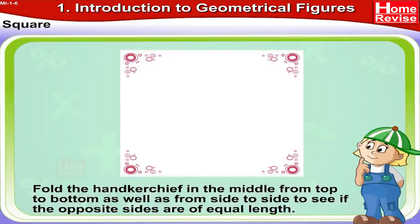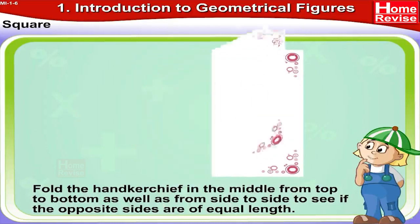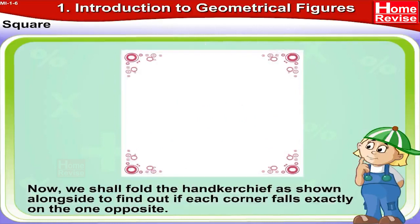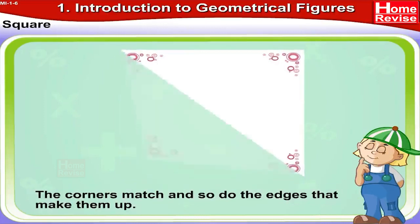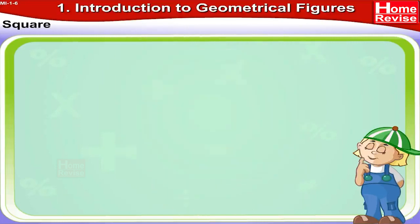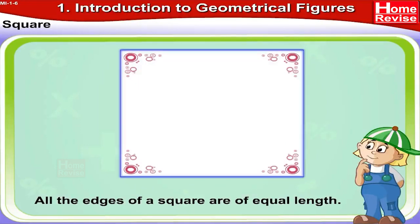Now fold the handkerchief in the middle from top to bottom, as well as from side to side, to see if the opposite sides are of equal length. Now we shall fold the handkerchief as shown to find out if each corner falls exactly on the one opposite. The corners match, and so do the edges. Fold the handkerchief over again — all the edges match in length, so all the edges of a square are of equal length.